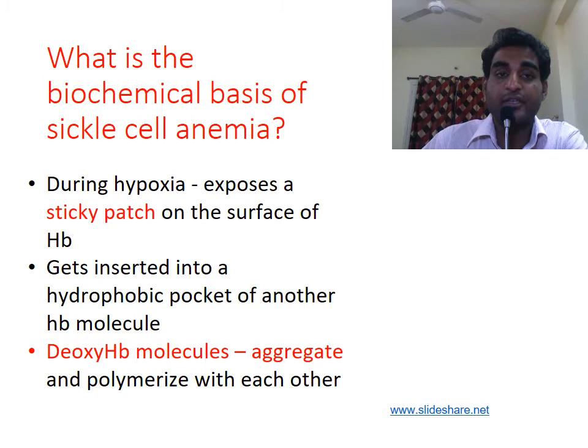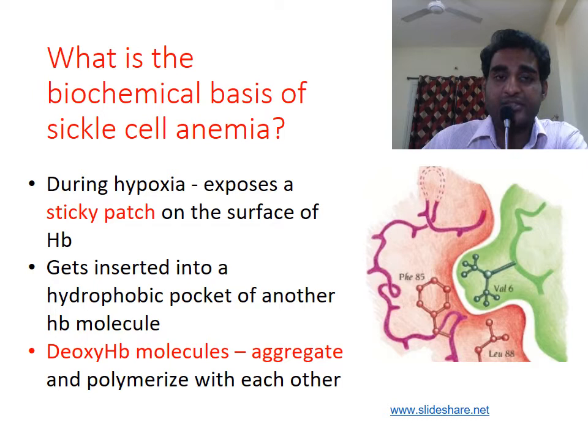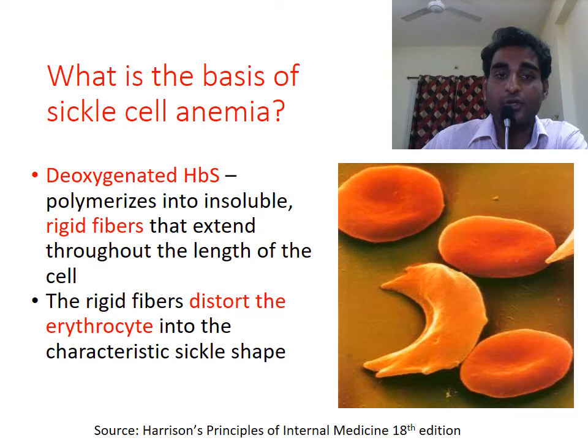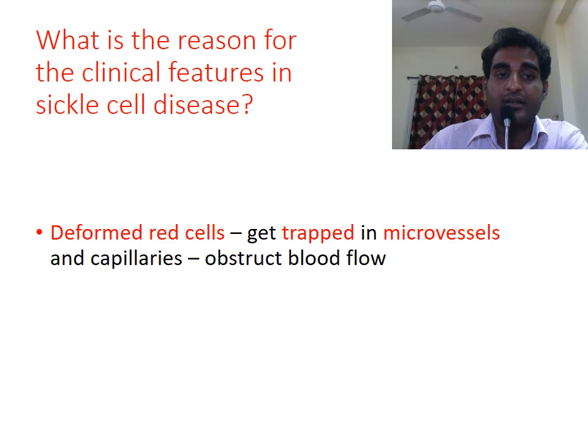The abnormality in HbS is that it exposes a sticky patch on the surface during hypoxic conditions. This patch can bind with a nearby hemoglobin molecule and thus aggregate and polymerize with each other. The polymerization of deoxygenated HbS forms insoluble rigid fibers that can distort and damage the red cell.